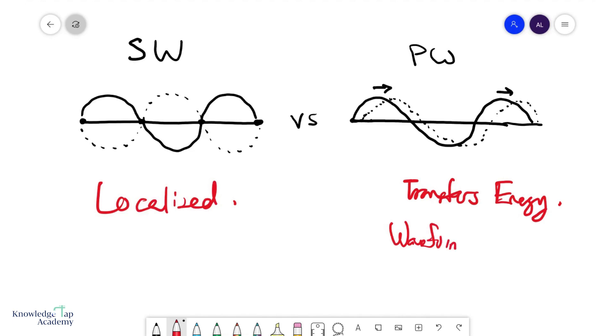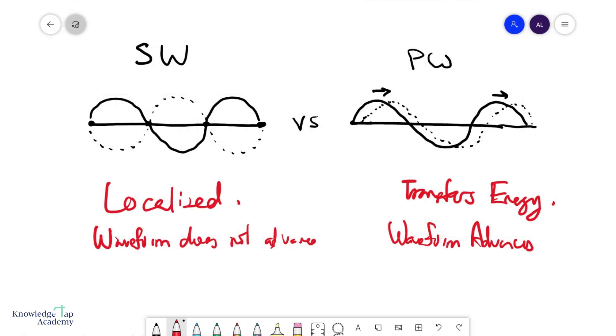the waveform advances. And of course, for a stationary wave, this waveform quite simply does not advance. So some very obvious differences here that we should appreciate.